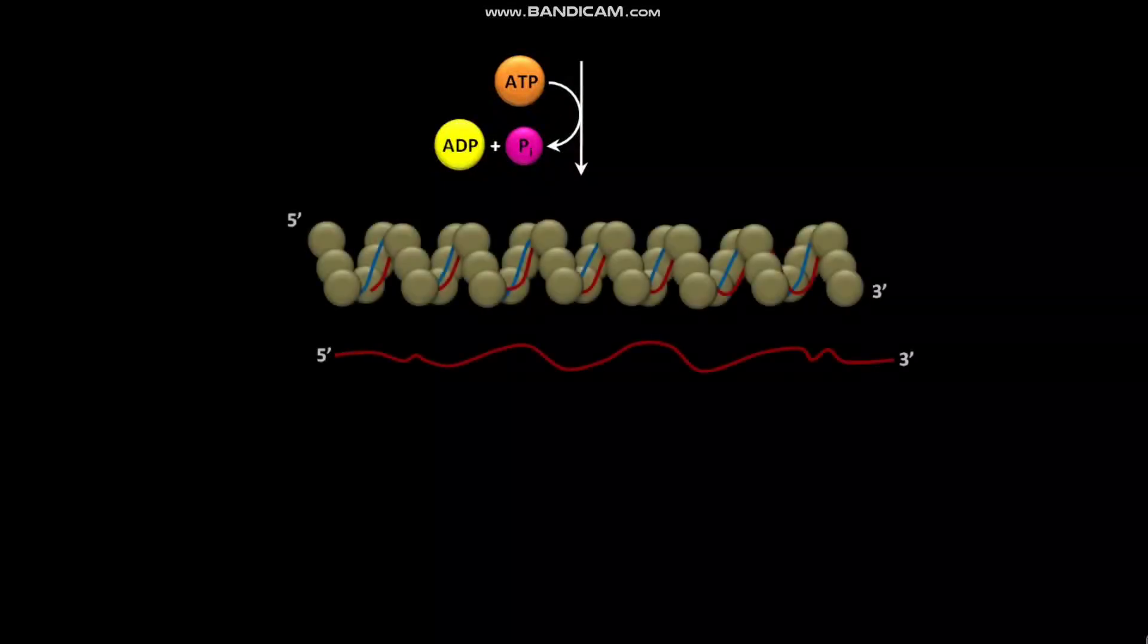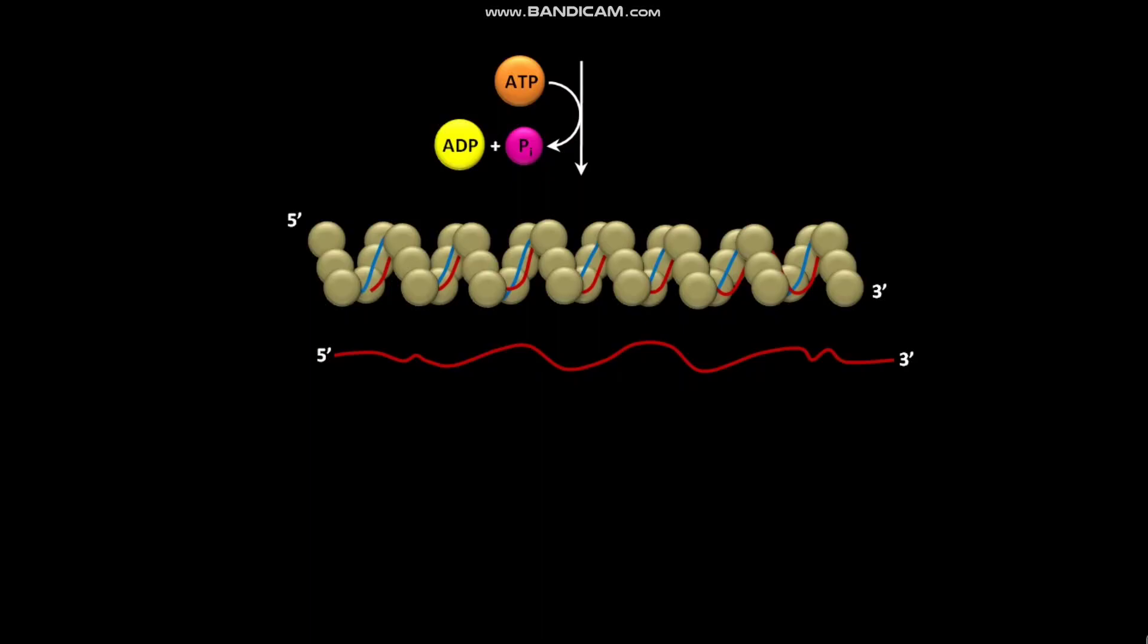This ATP hydrolysis promotes further rotation of both DS-DNA and SS-DNA relative to each other. As a result, the displaced strand separates entirely. This is the entirely separated DNA strand.